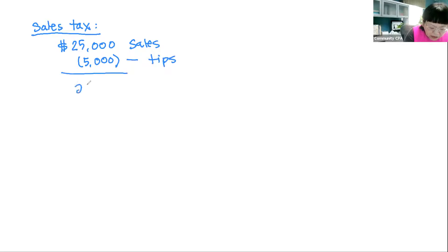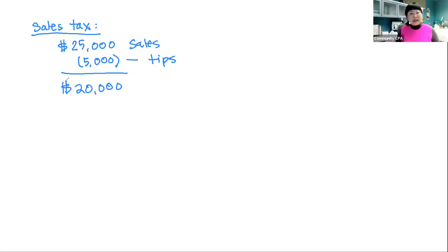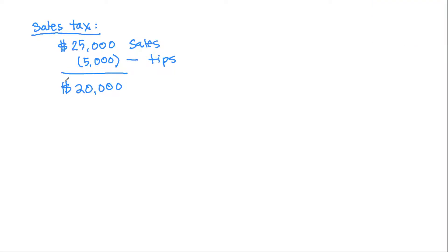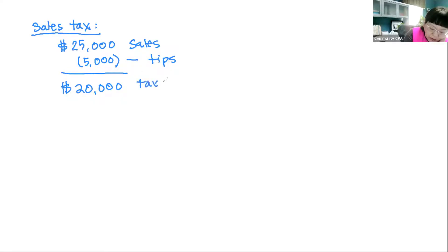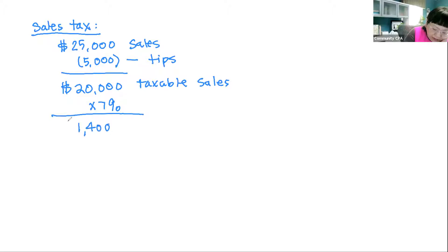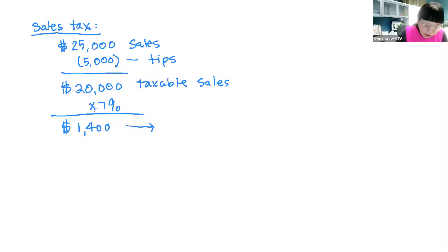So the total taxable sales is $20,000. If your sales tax percentage is seven percent, you might think the sales tax is $20,000 times seven percent. But if you say that's right, you're wrong. This is not your sales tax — it should not be $20,000 times 7%.